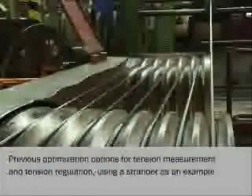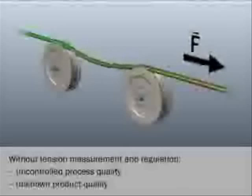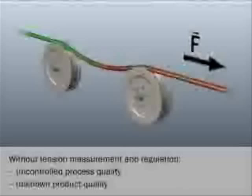Previous optimization options for tension measurement and tension regulation using a strander as an example. Without tension measurement and regulation: uncontrolled process quality, unknown product quality, high waste level, critical material deformation.